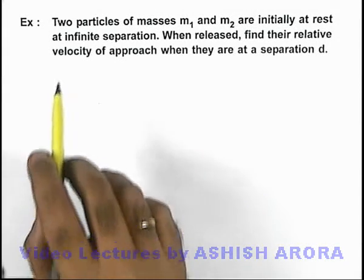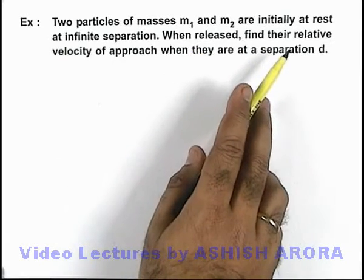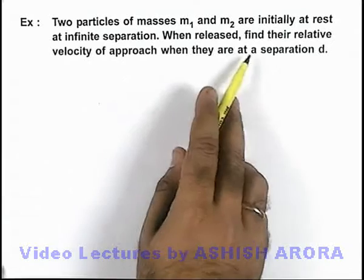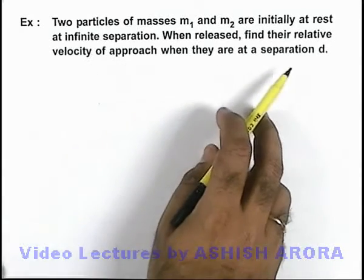In this example, we are given that two particles of masses m1 and m2 are initially at rest at infinite separation. When released, find the relative velocity of approach when they are at a separation d.